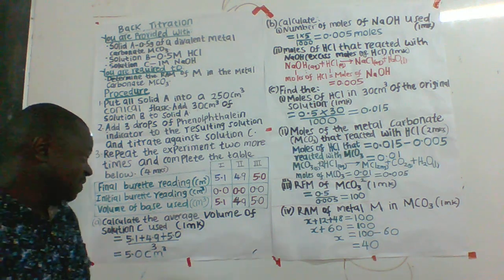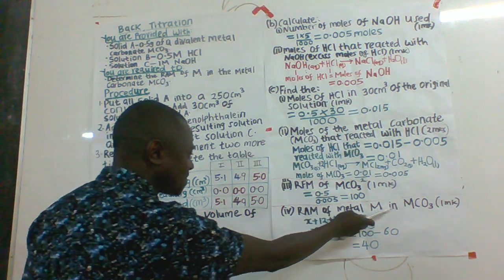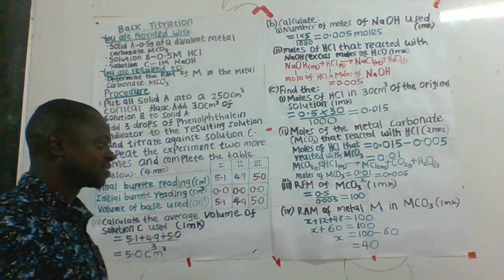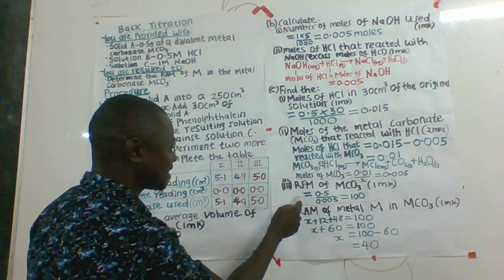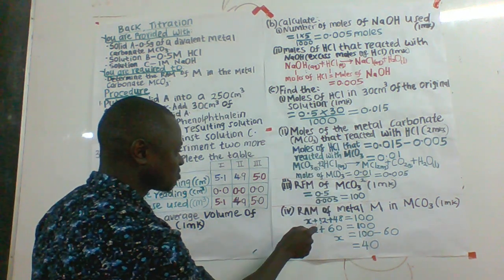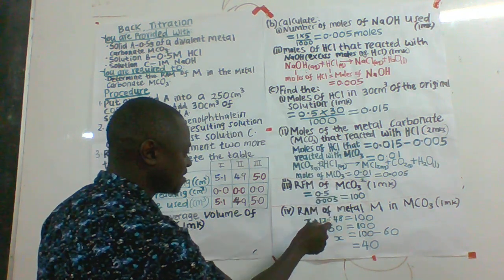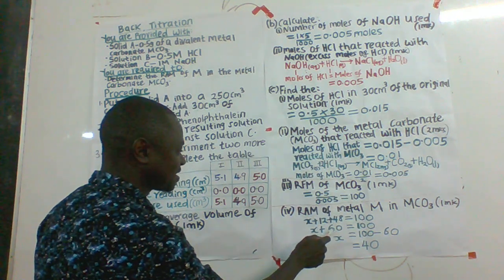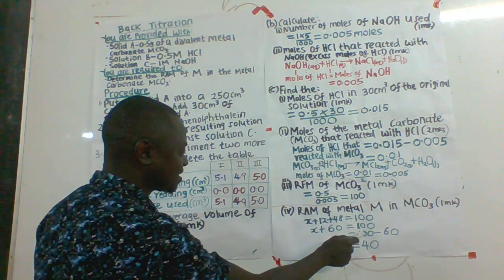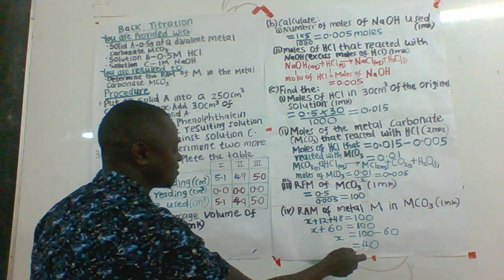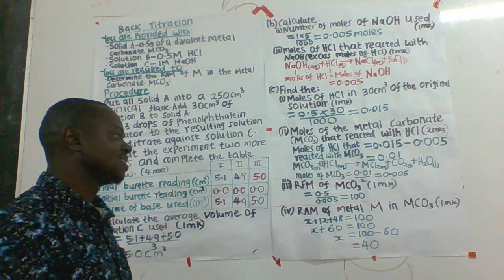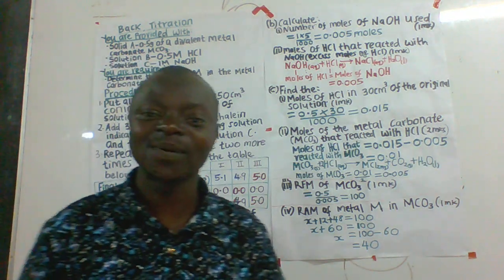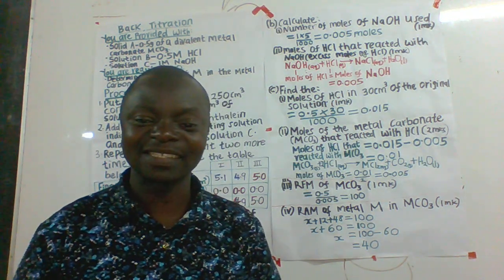We have also been asked to determine the relative atomic mass of metal M in the carbonate MCO₃. We use: M + 12 (for carbon) + 48 (for 3 oxygens) = 100. So M + 60 = 100, therefore M = 40. The relative atomic mass of metal M is 40. That is the end of this back titration example. Thank you.